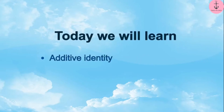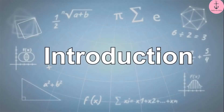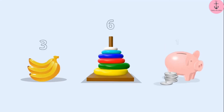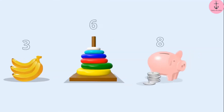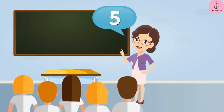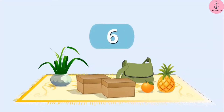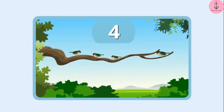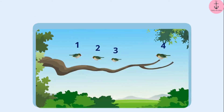Today we will learn about the additive identity and multiplicative identity of whole numbers. You might have done counting several times in your life — counting the students in a class, counting various objects, counting the birds on a tree, etc. Whenever we start counting, numbers like 1, 2, 3, 4, etc. come to our mind naturally. That's why we call counting numbers as natural numbers.